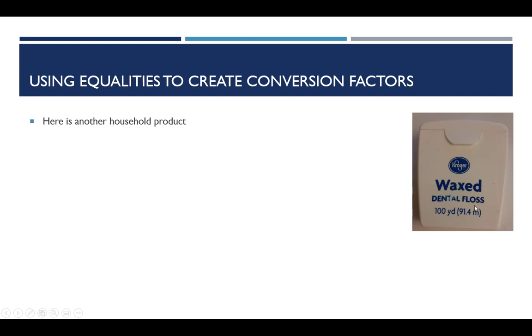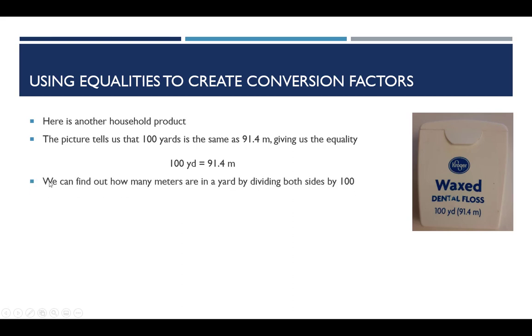And then here is some dental floss. And we could do roughly the same thing here. We see that 100 yards is equal to 91.4 meters. They're pretty close in terms of size. And now if we want to see how many meters are in a yard, we can divide both sides by 100. And dividing both sides by 100 gives you 1 yard equals 0.914 meters. And again, I can make two conversion factors from this: a yard over 0.914 meters and 0.914 meters over a yard.